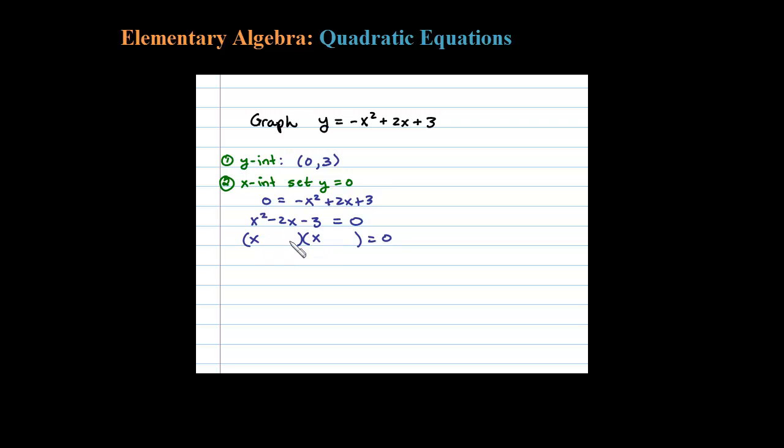But it does factor. 1 times 3 is 3, and 1x and 3x add up to -2 if the 3 is negative and the 1 is positive. A positive times a negative is negative, so it factors nicely: (x + 1)(x - 3) = 0. Setting each factor equal to 0 and solving, either x = -1 or x = 3.